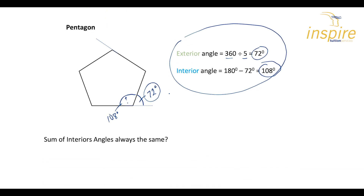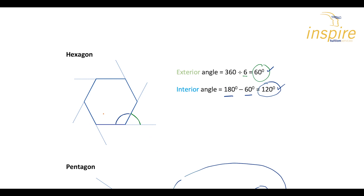We've already talked about the fact that exterior angles always add up to 360 degrees. But do all the interior angles always sum to the same total? The answer is no, they're not. This one is 108 for the pentagon, and when we did the hexagon it was 120. So if we're looking at the sum of the interior angles for a hexagon, we would do 120 degrees times six, because it has six angles and six vertices. So you get 720 degrees.